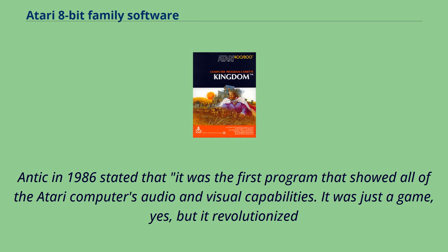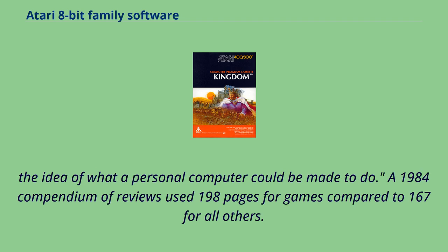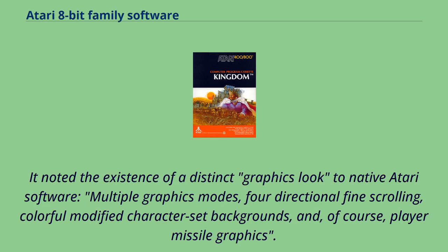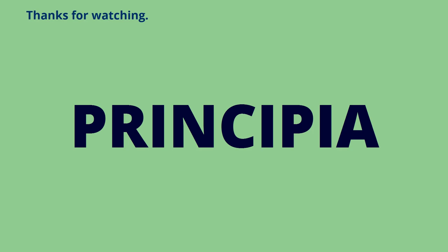Antic in 1986 stated that Star Raiders was the first program that showed all of the Atari computer's audio and visual capabilities. It was just a game, yes, but it revolutionized the idea of what a personal computer could be made to do. A 1984 compendium of reviews used 198 pages for games compared to 167 for all others. It noted the existence of a distinct graphics look to native Atari software, including multiple graphics modes, four-directional fine scrolling, colorful modified character set backgrounds, and player-missile graphics.